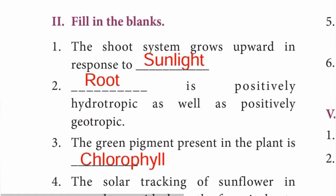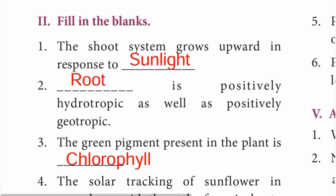Fill in the blanks. First one: the shoot system grows upward in response to sunlight. Second: root is positively hydrotrophic as well as positively geotropic. The answer is root.